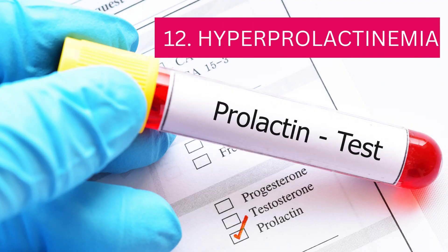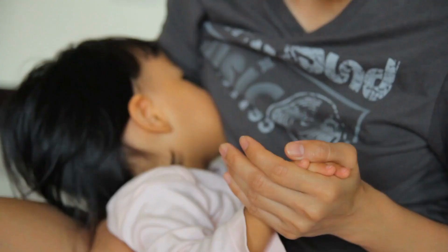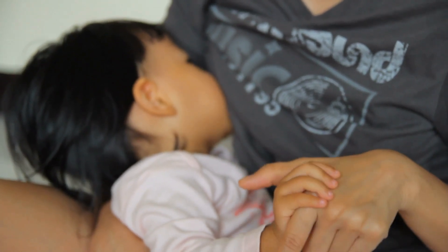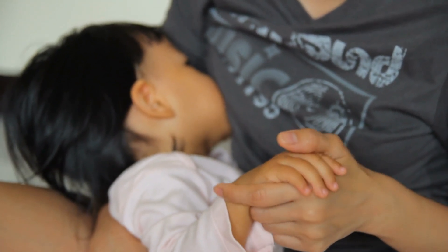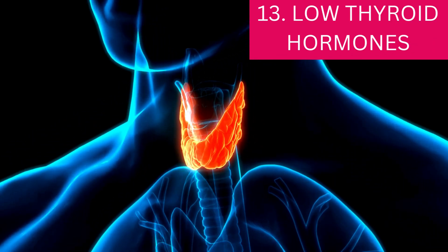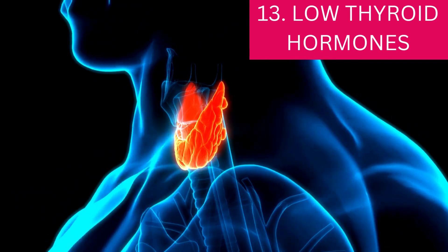Number 12: hyperprolactinemia. Prolactin is a hormone secreted for the production of breast milk, so in pregnant or breastfeeding women this hormone is very high. In women who are not pregnant or breastfeeding, when prolactin is high it suppresses the production of the hormones for ovulation — which is why exclusive breastfeeding is used as a form of birth control.